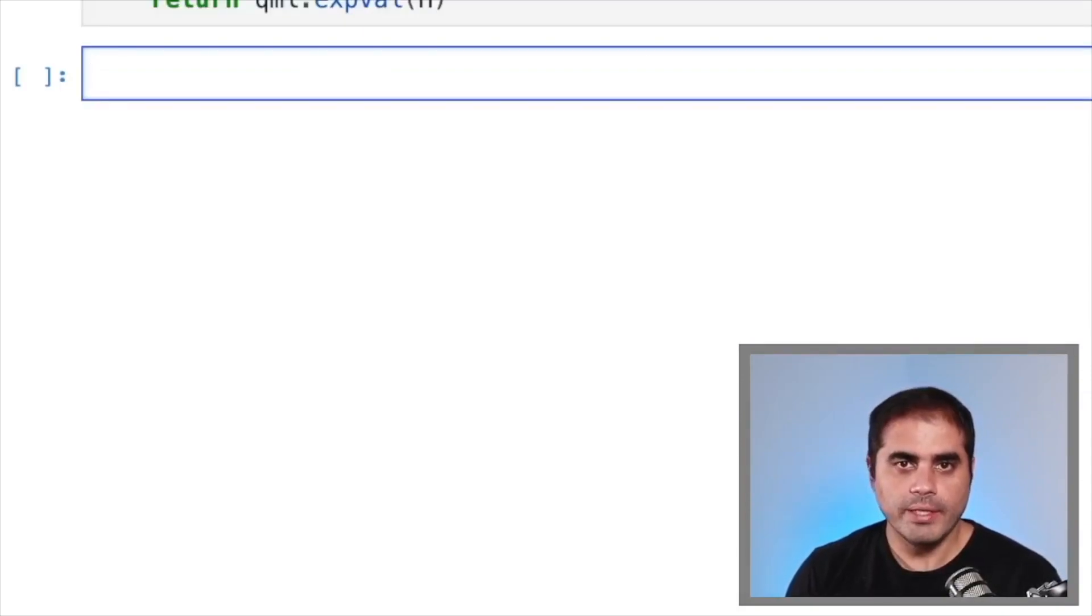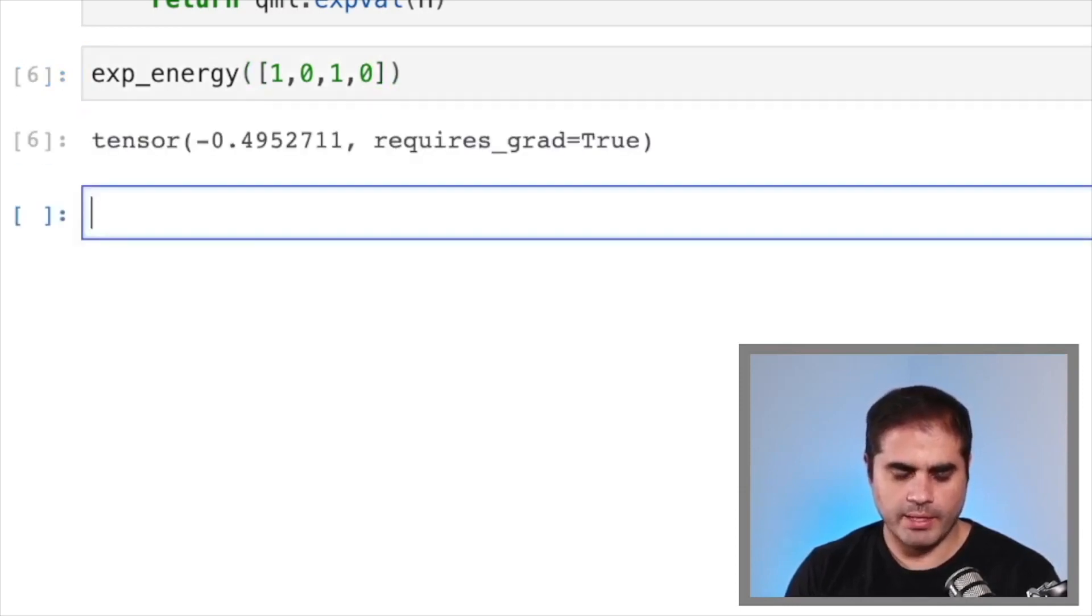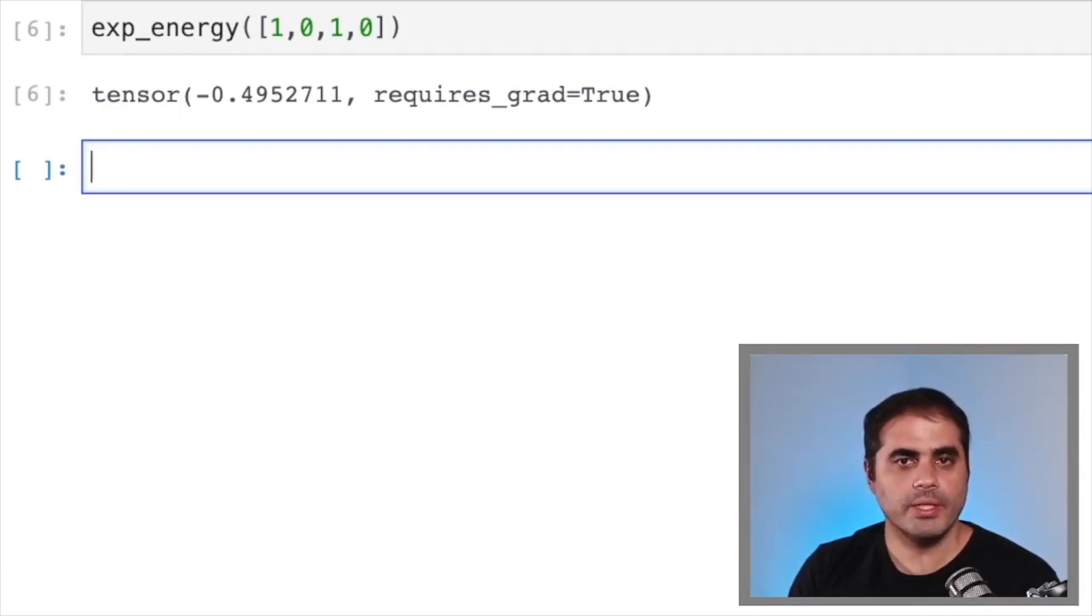So now let us see what this function returns for some states in the Jordan-Wigner representation. So we could write, for example, exp energy of a state that has one electron in the first energy level and one electron in the second energy level, both with spin up. And we get an energy of minus 0.49. So this state is not really the state with the lowest possible energy.